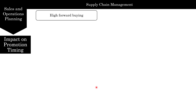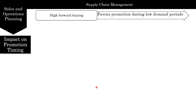If you have high forward buying — that is, a large percentage of people will move up their purchases due to your promotion — this favors promotion during low demand periods. A good example is happy hour: it tries to pull people from peak periods, like 7 or 8 o'clock when there are no tables available, to maybe 4:30 or 5 o'clock where there are lots of tables available. That's an example of using forward buying to flatten the demand curve.